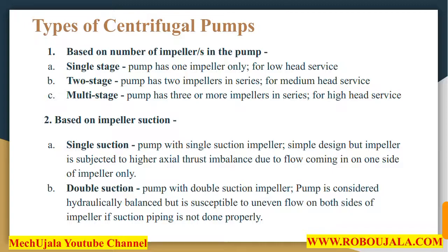The second classification is based on impeller suction. In a single suction pump, the single suction impeller has a simple design, but is subjected to higher axial thrust imbalance due to flow coming in from only one side of the impeller. In a double suction pump, the pump is considered hydraulically balanced, but is susceptible to uneven flow on both sides of the impeller if suction piping is not done properly.